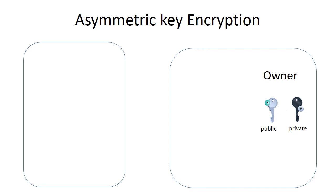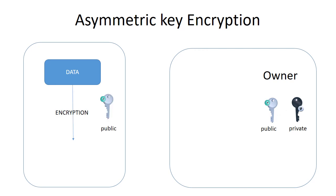Let's discuss how encryption works. In this diagram there are two parties: the owner and the outside user. The owner knows both the private and public key, while the outside user knows only the public key. In this case, the data is publicly available, and the outside party takes the data and encrypts it with the public key.